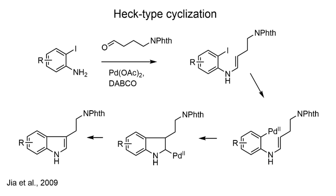There are other ways to make tryptamines like these. For example, GEA and co-workers used a Heck-type cyclization involving the reaction of an ortho-iodoaniline with a phthalimido-protected long-chain aldehyde. First, the nitrogen attacks the carbonyl — a condensation forms an enamine — and then, as in the earlier Larock-type process, in situ palladium(0) performs oxidative insertion to form an arylpalladium species, which carries out a carbopalladation on the enamine to afford an intermediate. A beta-hydride elimination, just like in a standard Heck reaction, then completes formation of the indole ring.